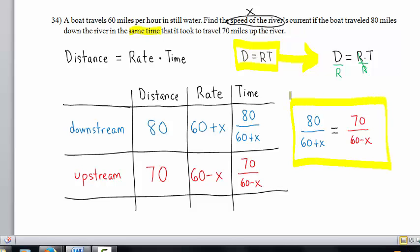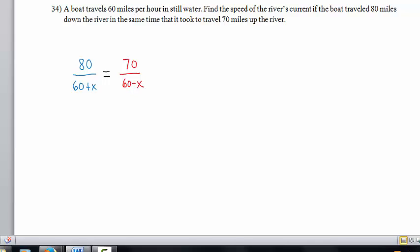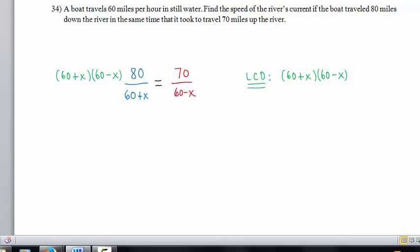Let's turn our attention there. Here we have a rational equation. To solve this rational equation, we will multiply both sides by the least common denominator. The least common denominator in this case is simply the product of these two denominators. So we multiply on the left side of the equation by the LCD, and we multiply on the right side of the equation by the LCD. These factors divide to 1. On the left-hand side of the equal sign, we have 80 times the quantity 60 minus x.